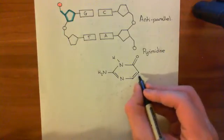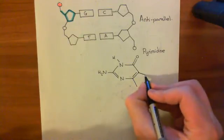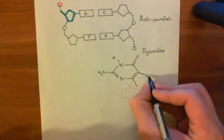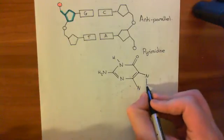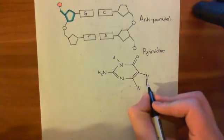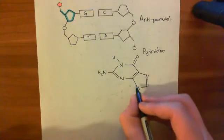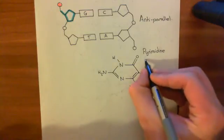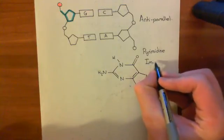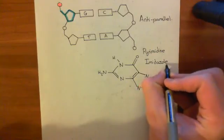Off this face of the pyrimidine ring you also have another ring linked off, and this is going to be a five-membered ring — an imidazole ring. So you have two nitrogens like so, then a double bond to a carbon. It's a five-membered ring consisting of three carbons and two nitrogens. This is the imidazole ring.